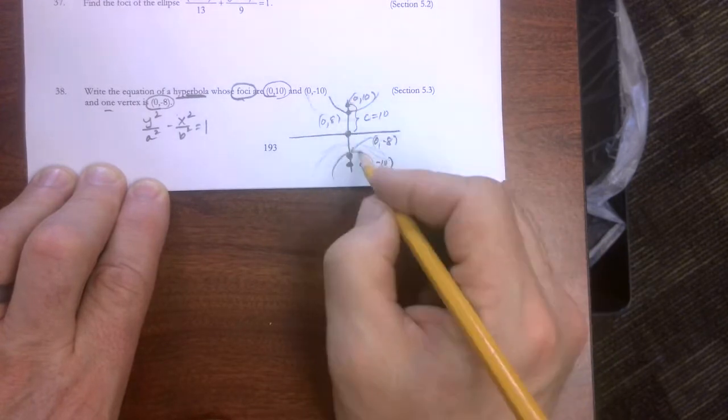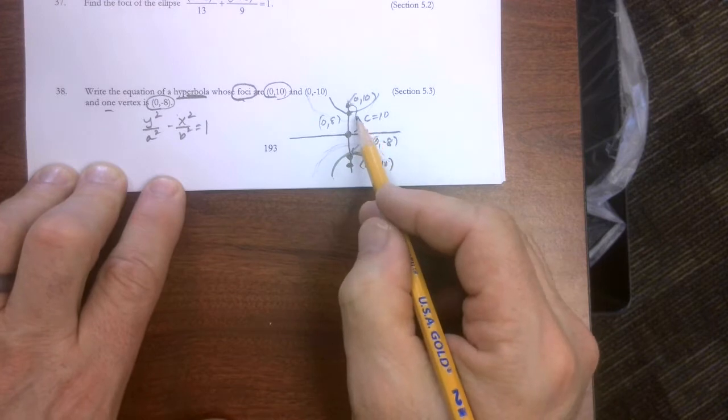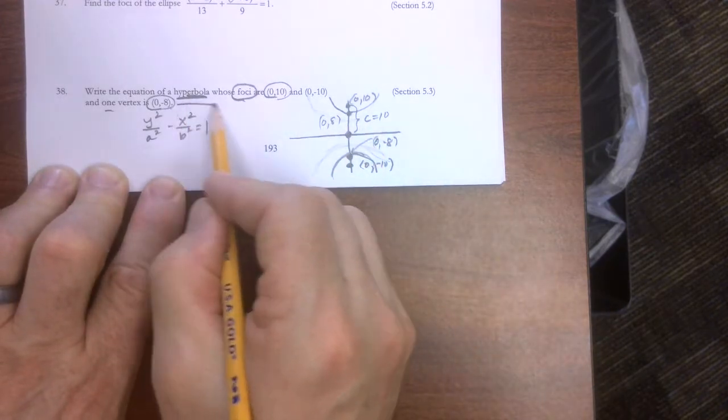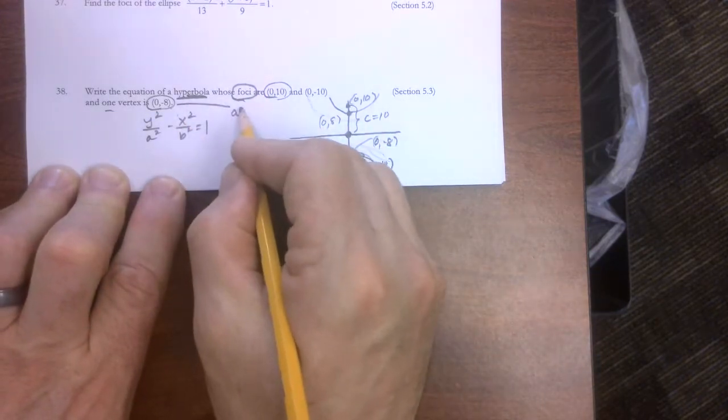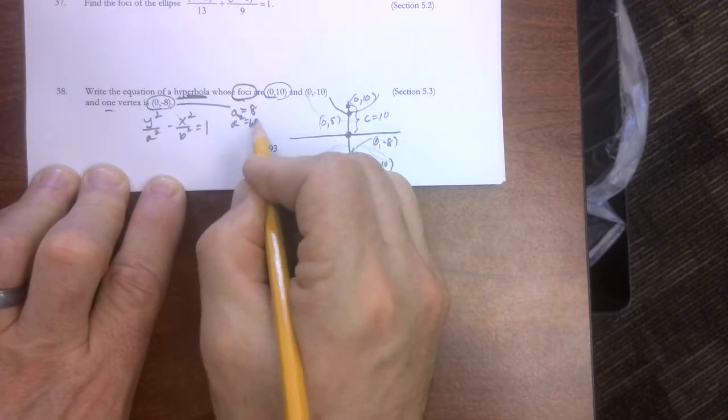Now we could assume that the other one would be 0, positive 8, just if some of you need to see what the drawing would look like. But it also tells us that a equals 8, or a squared equals 64.